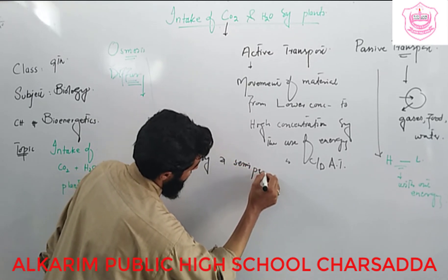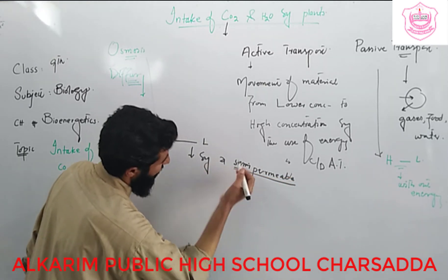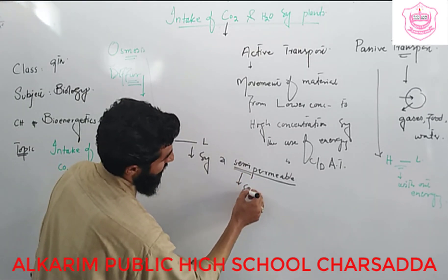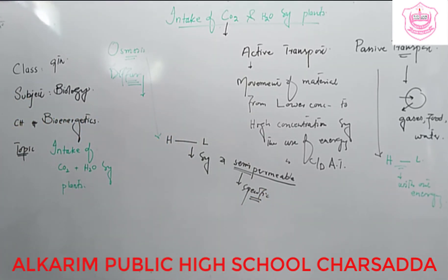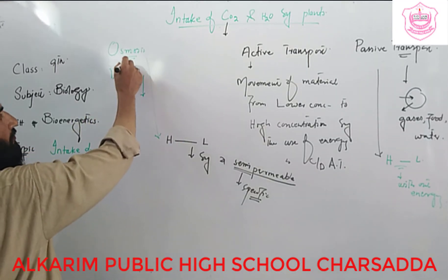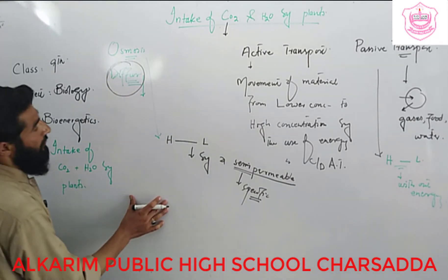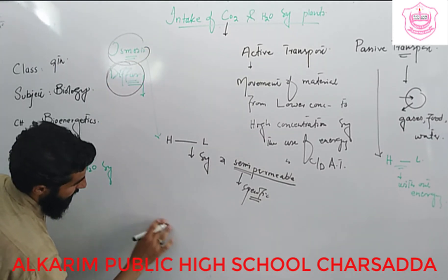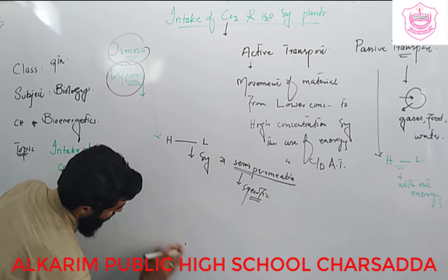A semi-permeable membrane is a membrane that allows only specific types of molecules to pass through. In the root hair cell, molecules move by osmosis, while diffusion is mostly used for gases. Normally in the plant, water moves by osmosis — from lower concentration to higher concentration.